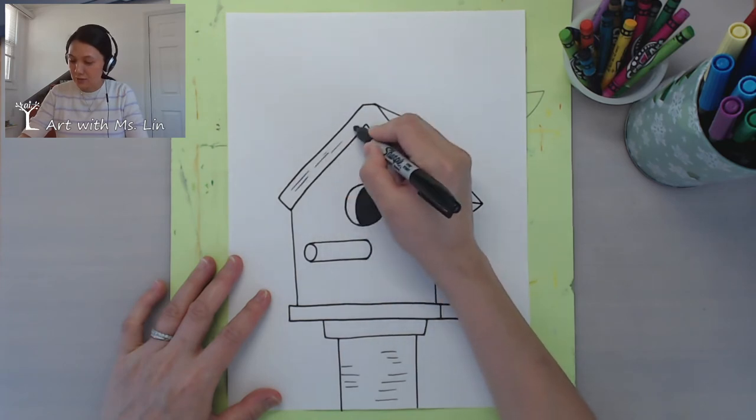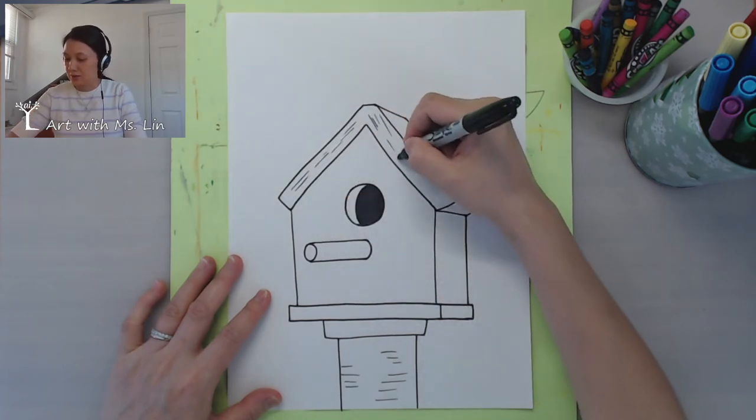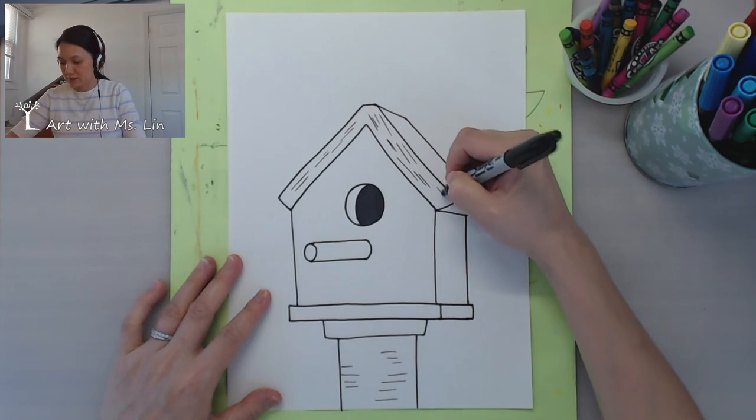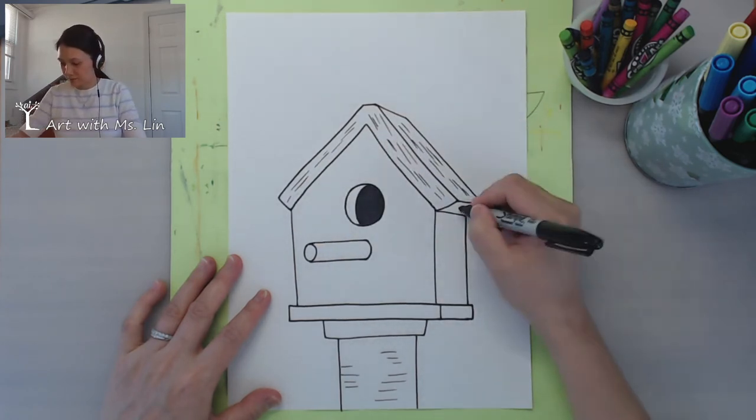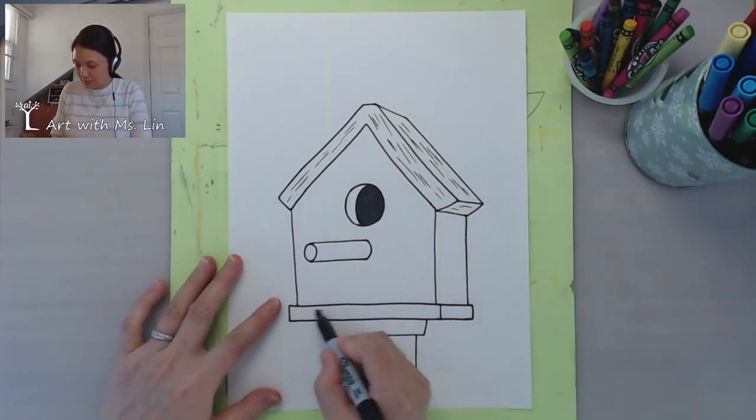And in fact, you can do that too. Just kind of draw some vertical lines like this to show the wood texture of the house.